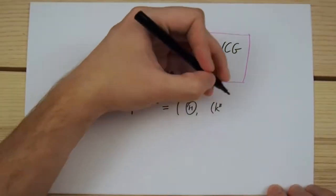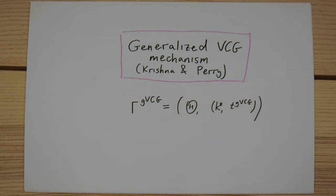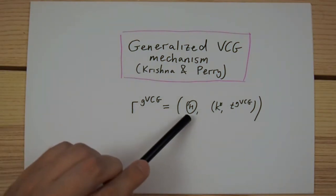It is defined within the framework of a quasi-linear model. Of course, we are looking for a direct revelation mechanism in which every player reports their type.